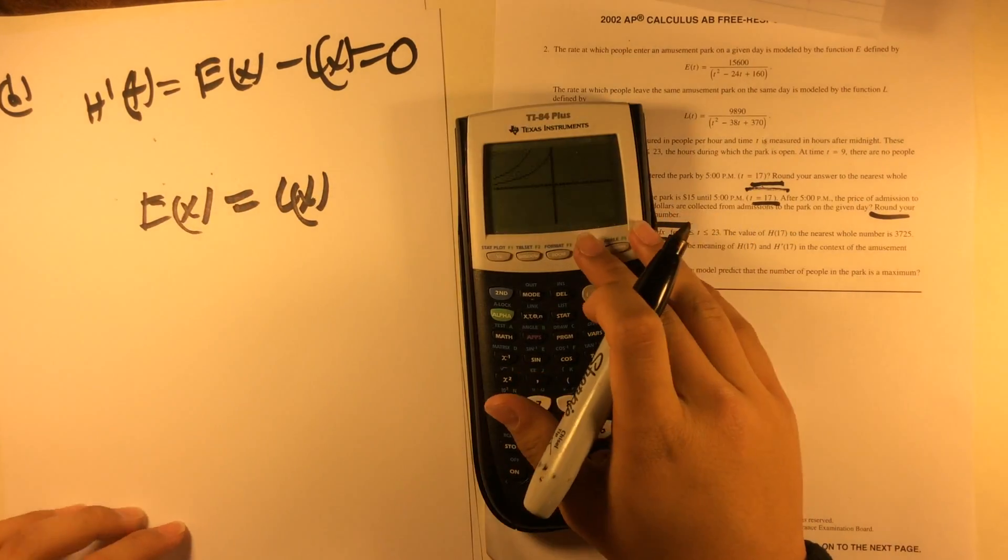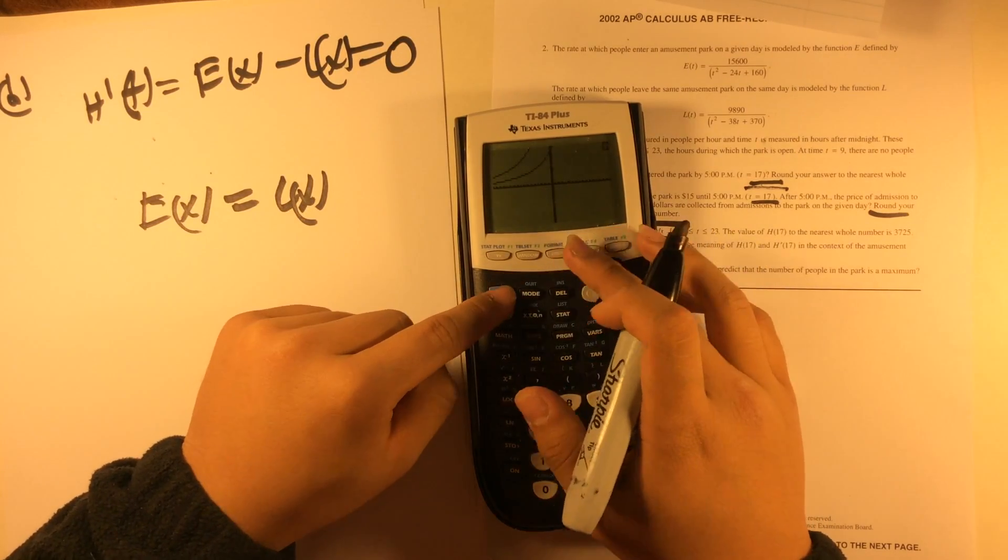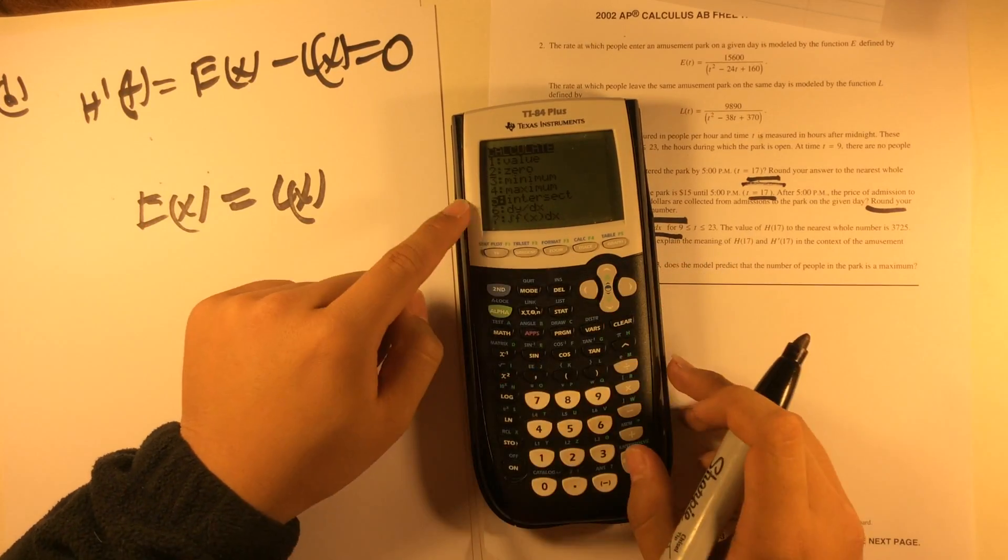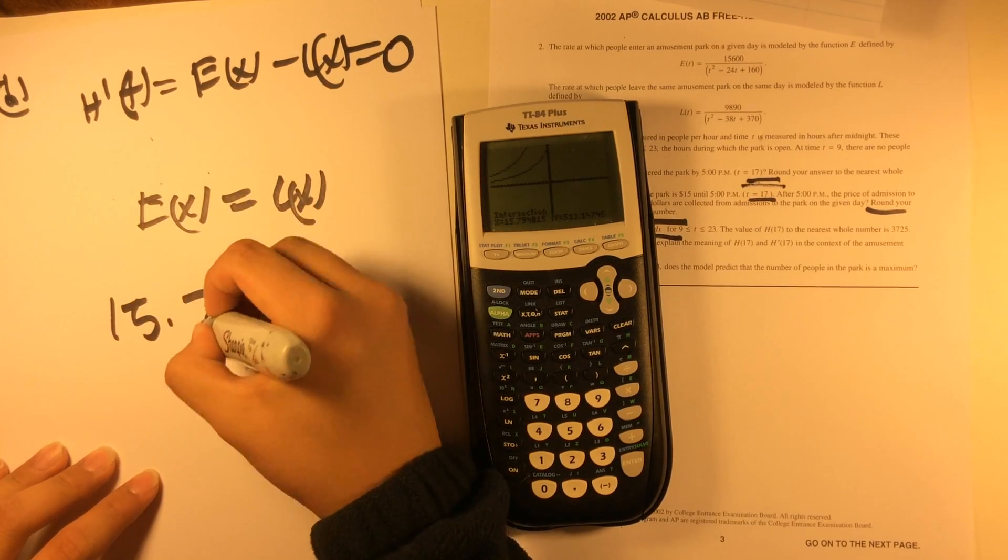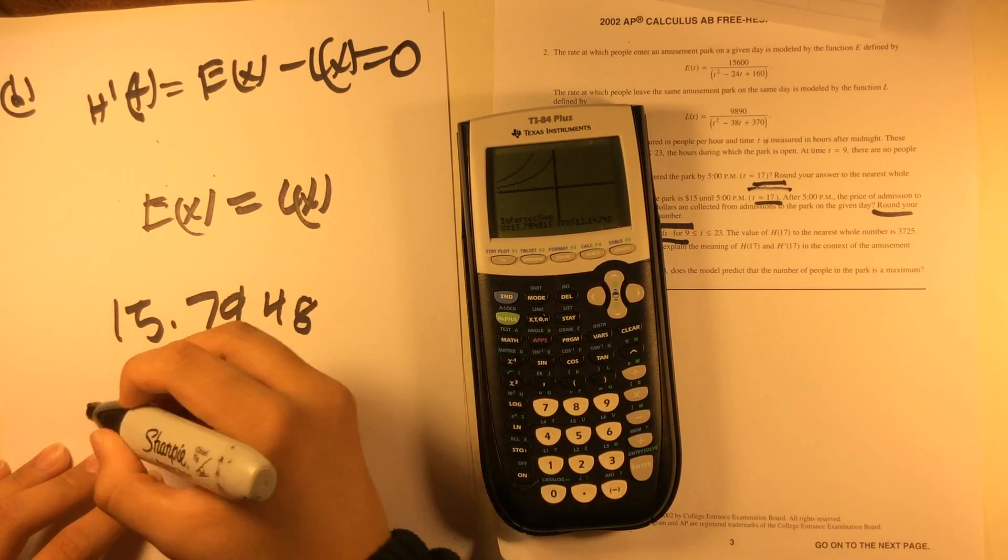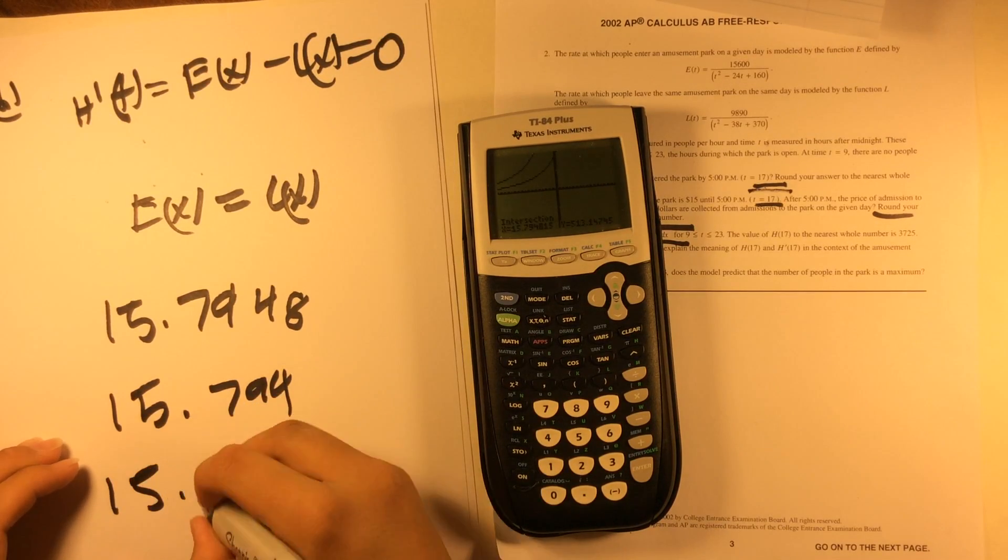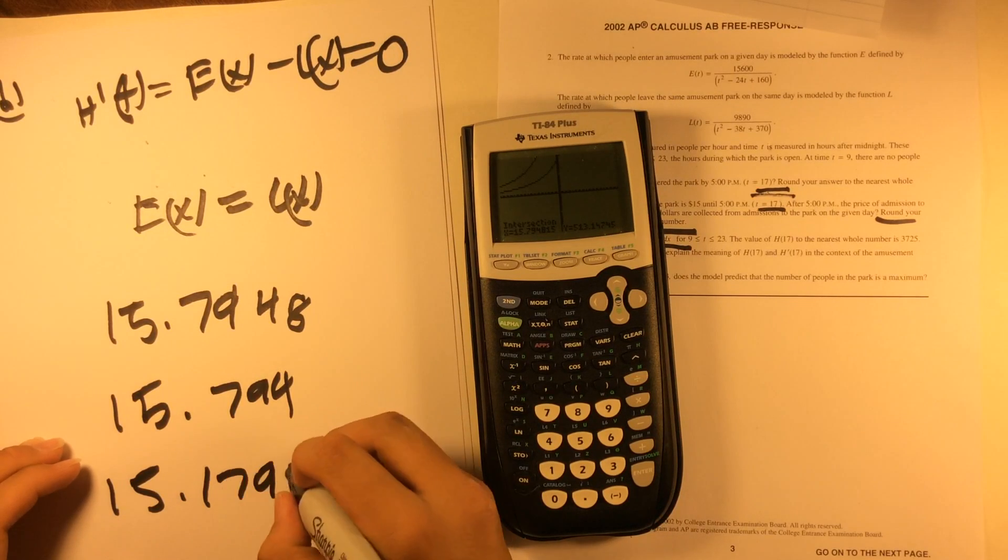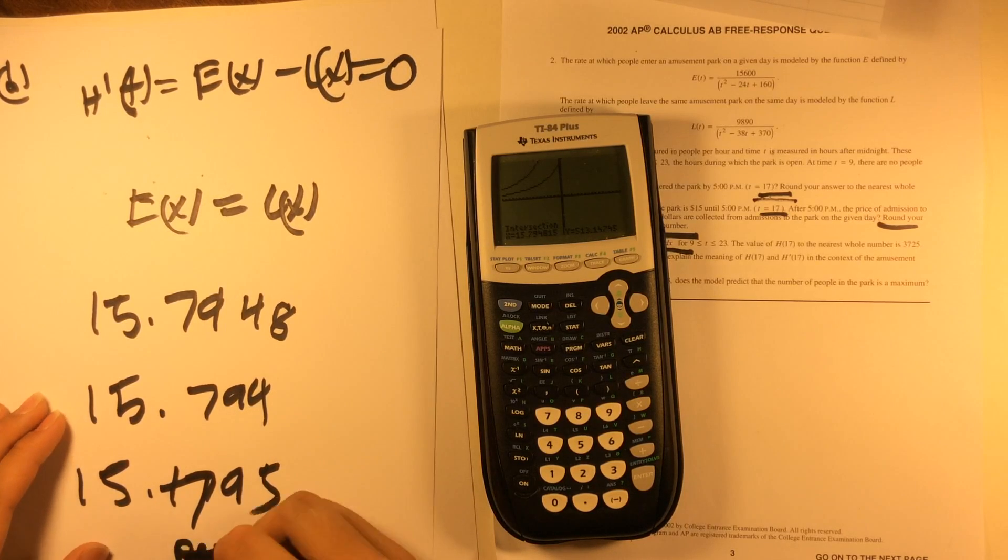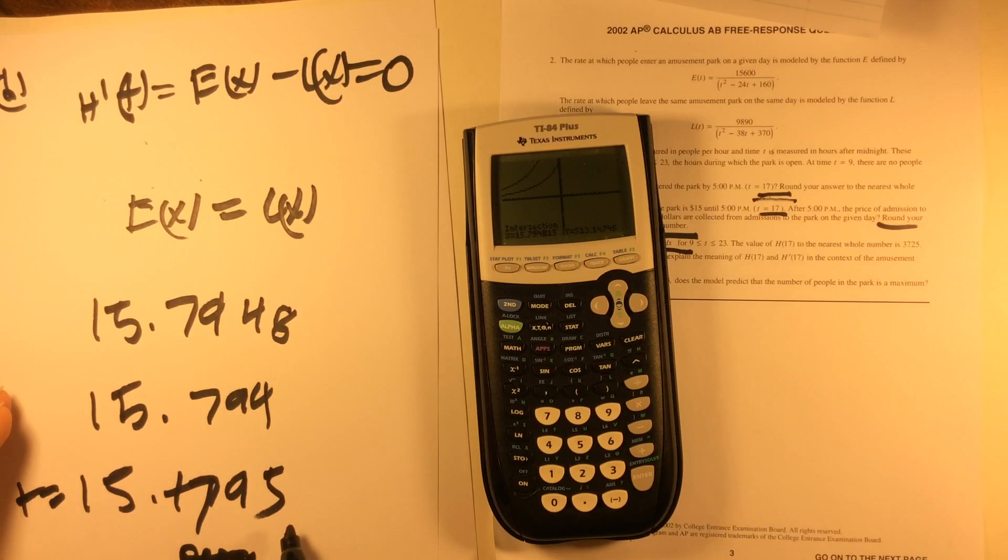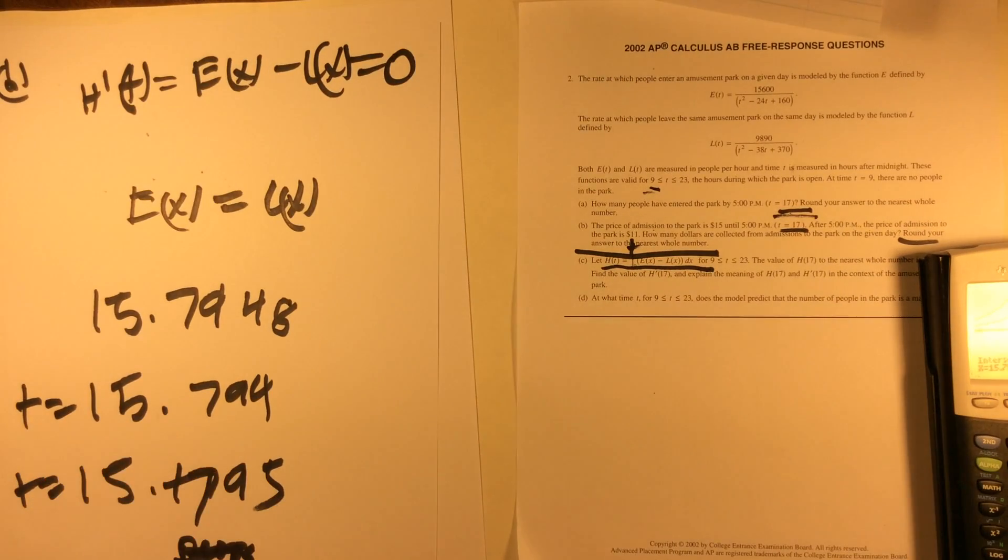Then you just do E(X) equals L(X). Since this is on calculator, you can graph it, which I already have punched in here. You go second calculator and intersect, first curve enter, second curve enter, guess enter. The answer is 15.7948, which if you truncate is 15.794, if you round it's 15.795. So basically when T equals this number, that is when there is a maximum number of people in this park. Thanks for watching.